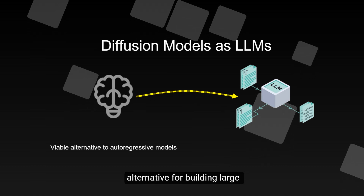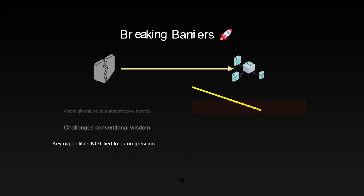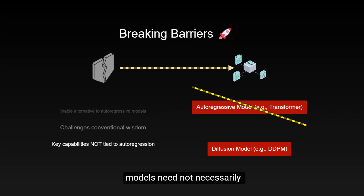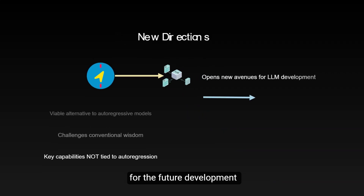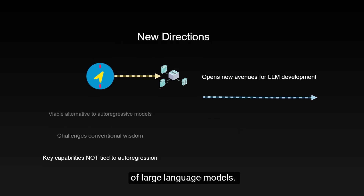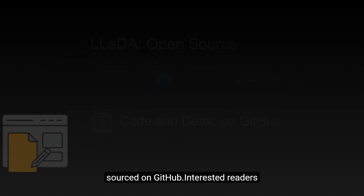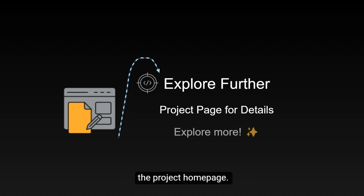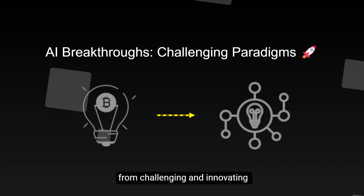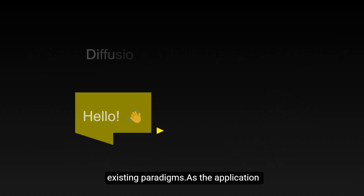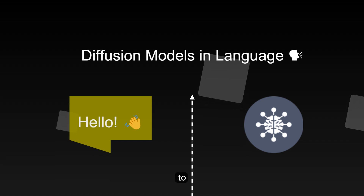The significance of this research lies in demonstrating that diffusion models can serve as a viable alternative for building large language models. More importantly, it challenges a common perception: the key capabilities of large language models need not necessarily rely on autoregressive architectures. This opens up new directions for the future development of large language models. LIDA's code and demo have been open-sourced on GitHub. This study once again proves that breakthroughs in AI often come from challenging and innovating existing paradigms, and as diffusion models in language continue to deepen, we may see more surprising progress.